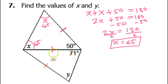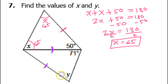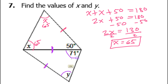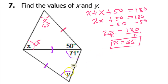Now we'll do the same thing for the bottom triangle. If I've got these two congruent sides, that makes these the base angles, and the base angles are going to be congruent. I don't need any fancy calculations — these are simply congruent, so y is going to equal 71 degrees.